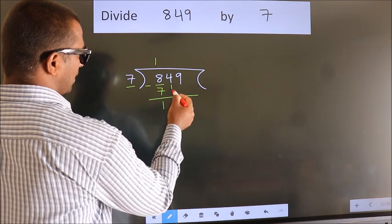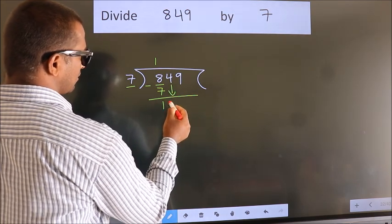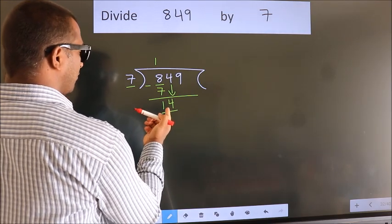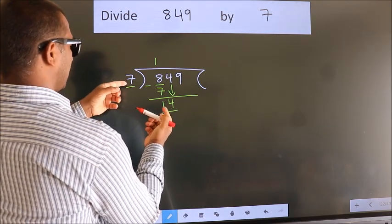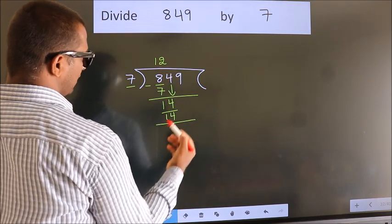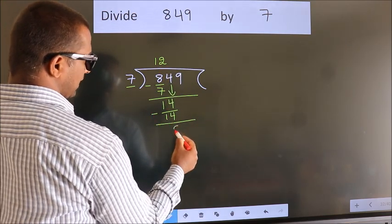After this, bring down the beside number. So 4 down. So 14. When do we get 14? In 7 table. 7 twos, 14. Now we subtract. We get 0.